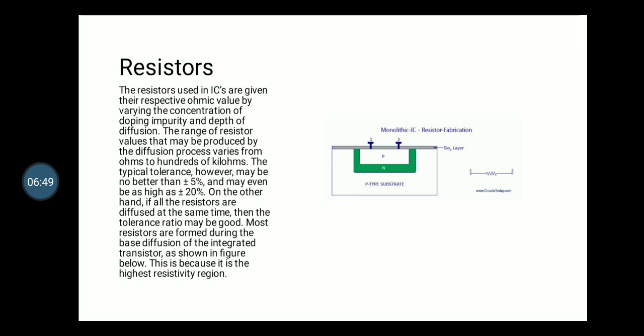By varying the concentration of the doping impurity and the depth of diffusion, the range of resistor values that may be produced by the diffusion process varies from ohms to hundreds of kilo-ohms. The typical tolerance level, however, may be no better than plus or minus 5 percent and maybe even as high as plus or minus 20 percent. On the other hand, if all the resistors are diffused at the same time, then the tolerance ratio may be good. Most resistors are formed during the base diffusion of the integrated transistors because it is the highest resistivity region.